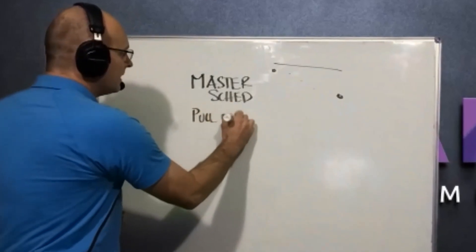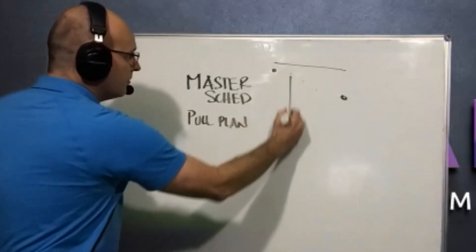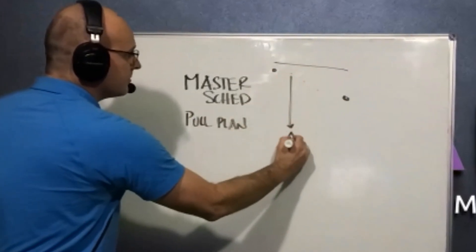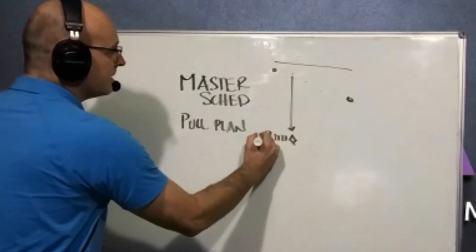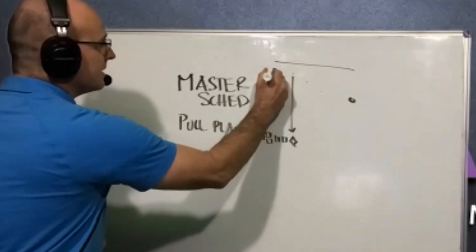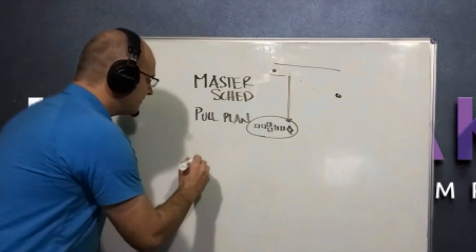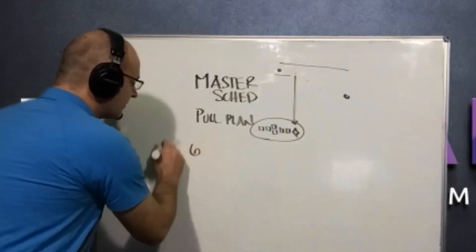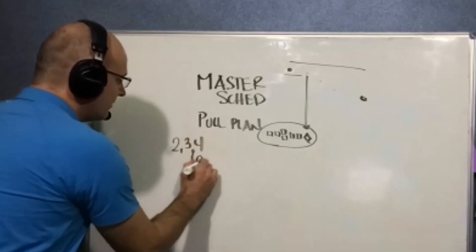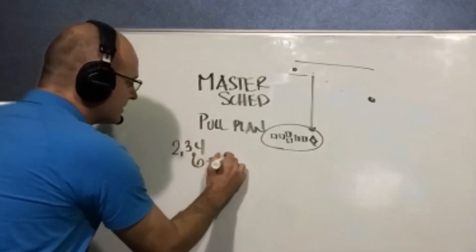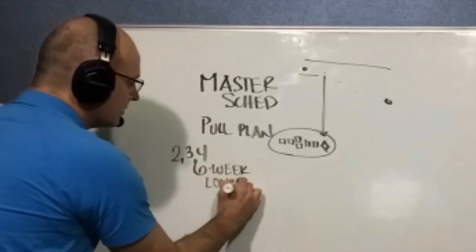After that, you're always going to have your pull plan. That's where, whether you're using CPM or TACT, you vertically align that milestone and then pull plan the sequence — usually backwards, but it can be done forward — and you confirm that sequence with your trade partners. Then you come down and you have a six-week make-ready look-ahead schedule.